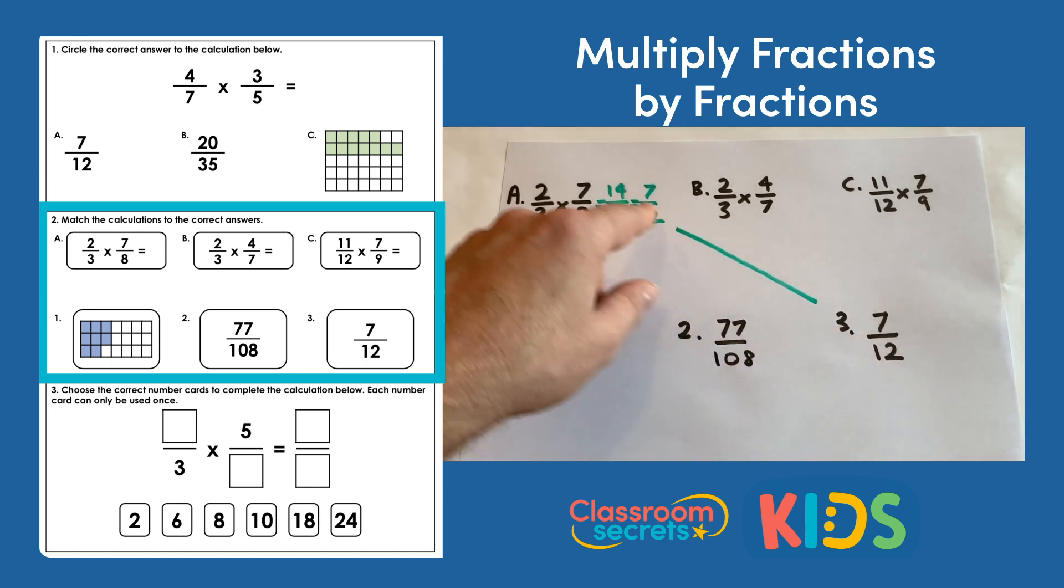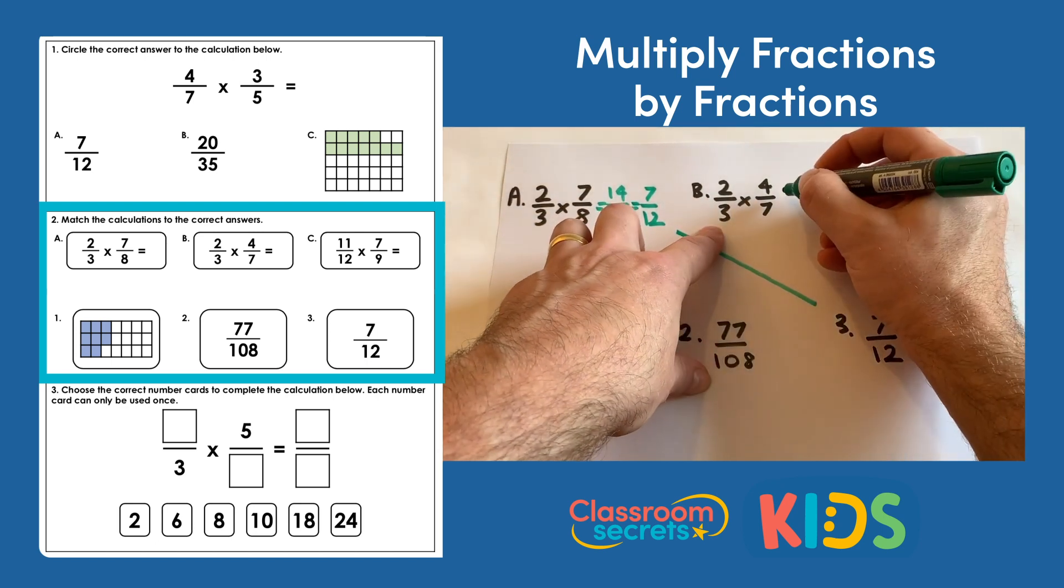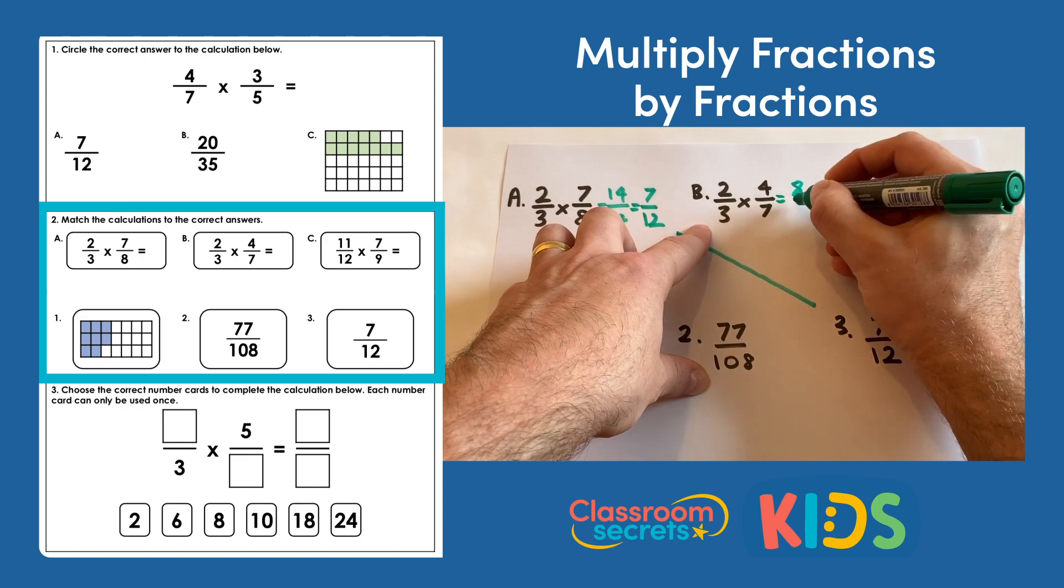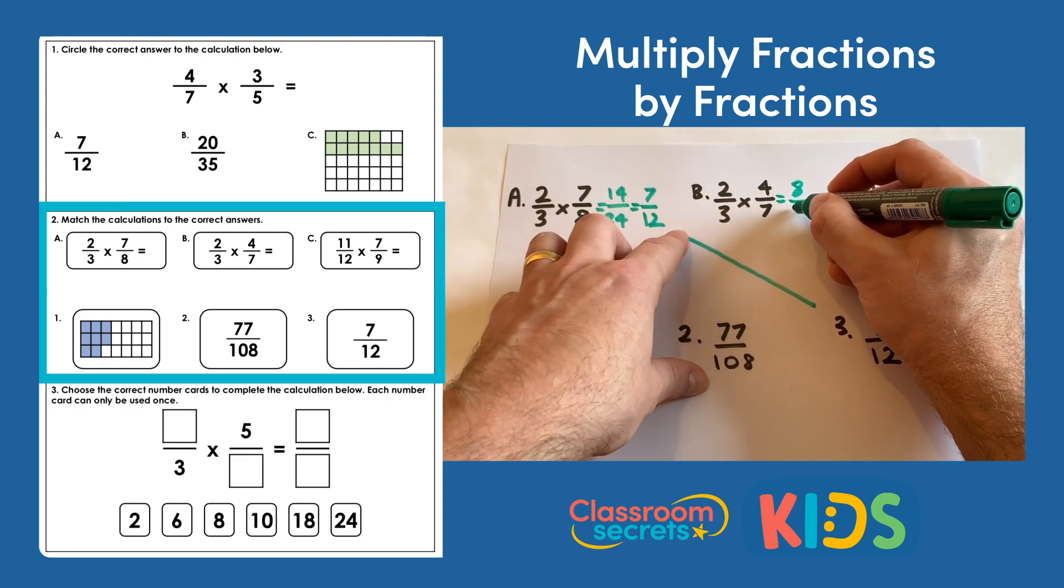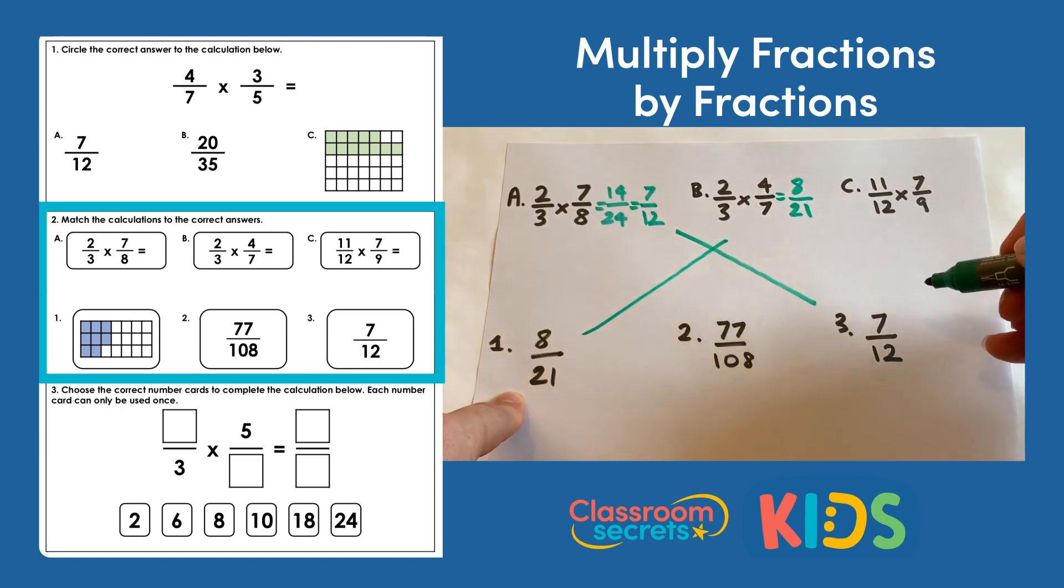That is answer three, so we can match that up—A matches to three. So B: 2/3 multiplied by 4/7. Two multiplied by 4 is 8, and 3 multiplied by 7 is 21, and that matches up to number one.